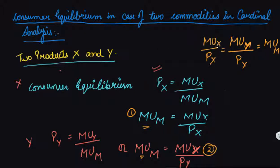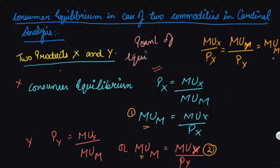Combining both equations, the consumer equilibrium condition for two commodities is: MU_x divided by P_x equals MU_y divided by P_y. This is the point of consumer equilibrium in the case of two commodities.